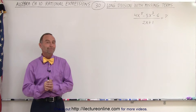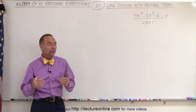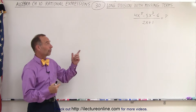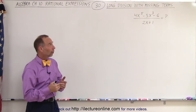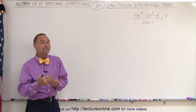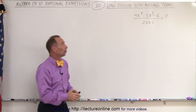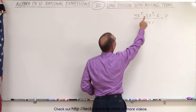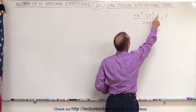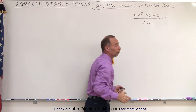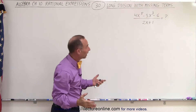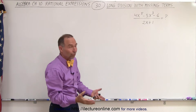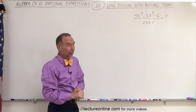Welcome to Y Lecture Online. Often we're confused when we end up with a problem like this, where there appear to be missing terms. Notice we only have x to the 5th, x to the 3rd, and a constant in the numerator. What happened to x to the 4th, x squared, x to the 1st power?